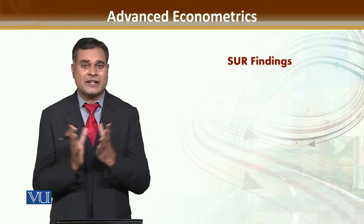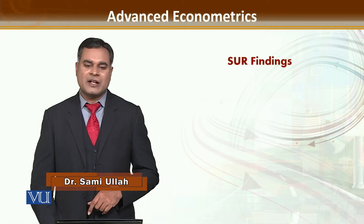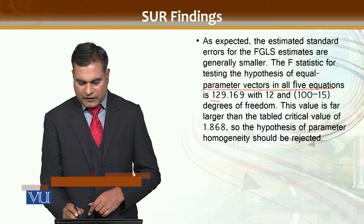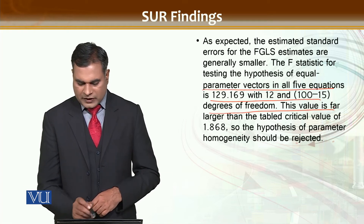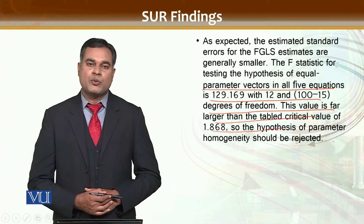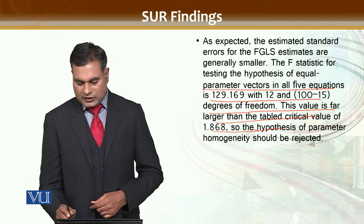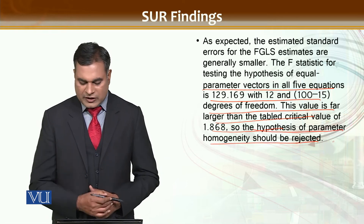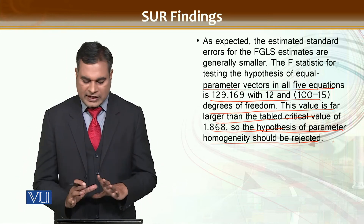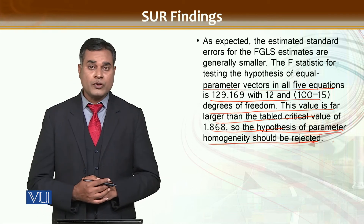The error pattern is based on whether they are correlated or they are not correlated. Secondly, on the basis of source findings, the parameter vector of five variables is given and we are going to compare the interpolated value with the critical value. On the basis of this, the study shows that the hypothesis of parameter homogeneity should be rejected.